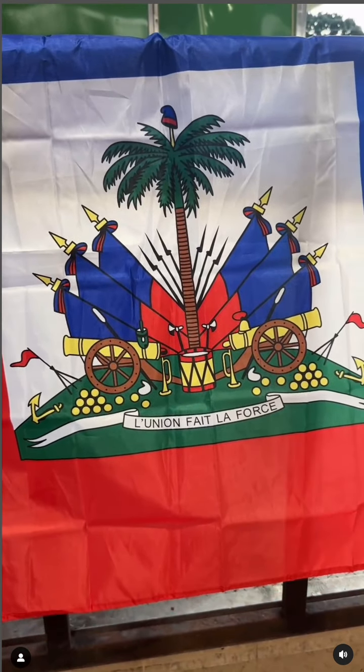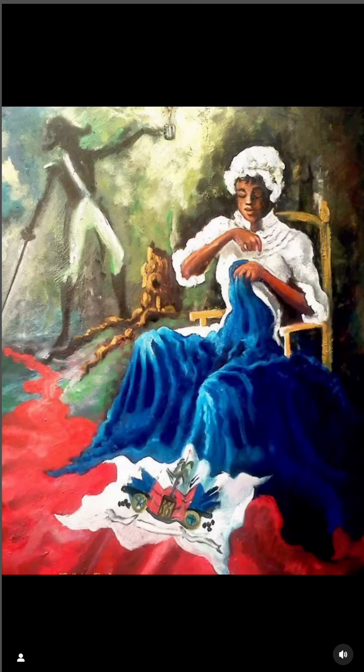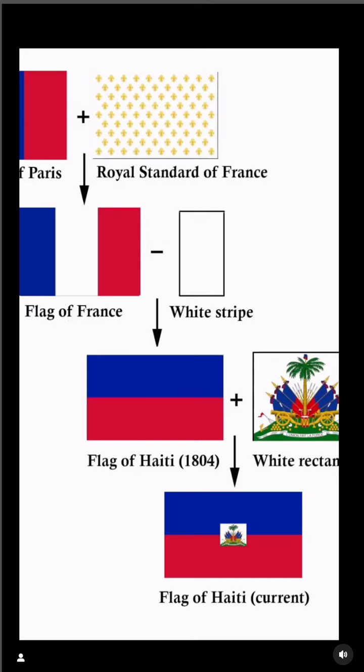Prior to Haiti's independence from France, its flag was white with the image of the French crown over a blue shield. Haitian folklore reveals that Jean-Jacques Dessalines created the flag by taking a French tricolored flag and ripping out the white center. He then had his goddaughter, Catherine Flan, sew the remaining blue and red bands together. After the revolution, Haiti adopted a vertical black and red flag that was only used for two years.